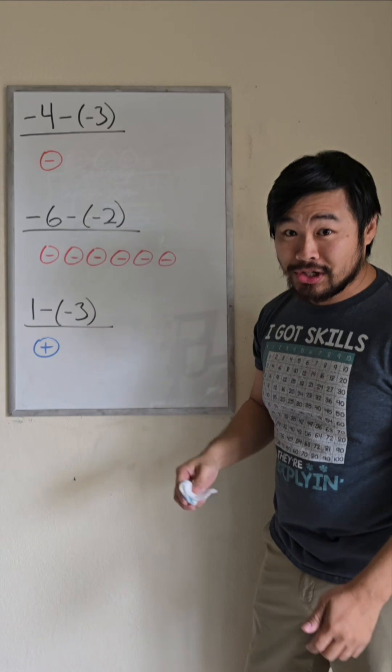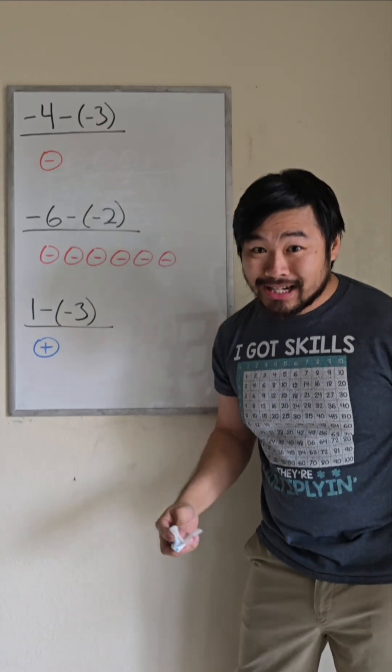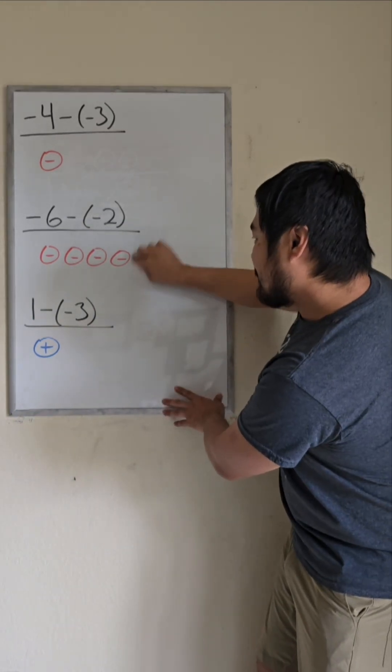With negative 6 take away negative 2, literally take away negative 2. So the answer is negative 4.